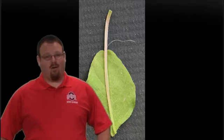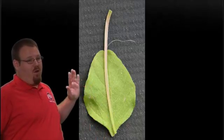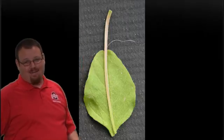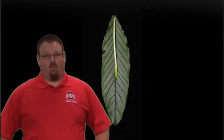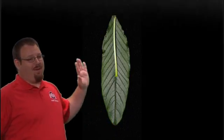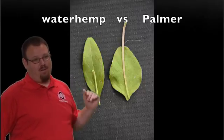With the Palmer and the waterhemp, the next thing you're going to want to look at is petiole length. So with our Palmer plant you're going to have a petiole that is as long or longer than the leaf. With the waterhemp you're going to have something that is about a third to half of the leaf but it's never going to be the length of the leaf.